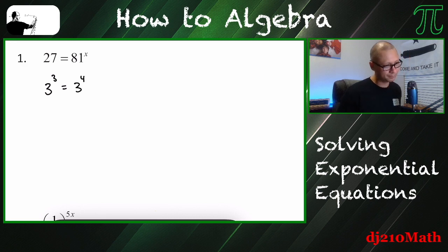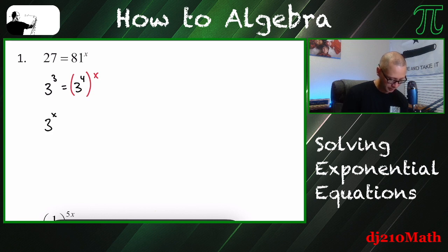So it's going to be 4. And this is still to the x power, right? All we did was rewrite 81 as 3 to the 4th. So when you have a power that's raised to a power, you multiply the exponents. So this is going to be 3 cubed, 3 to the 4x.